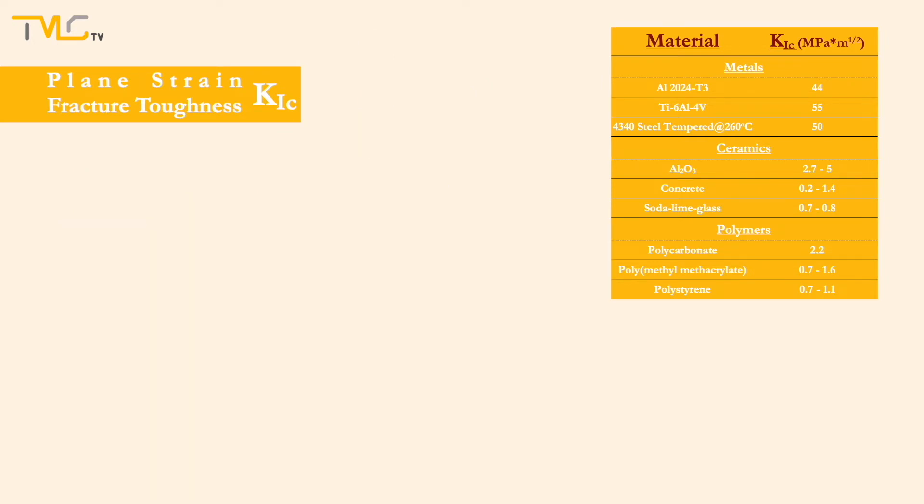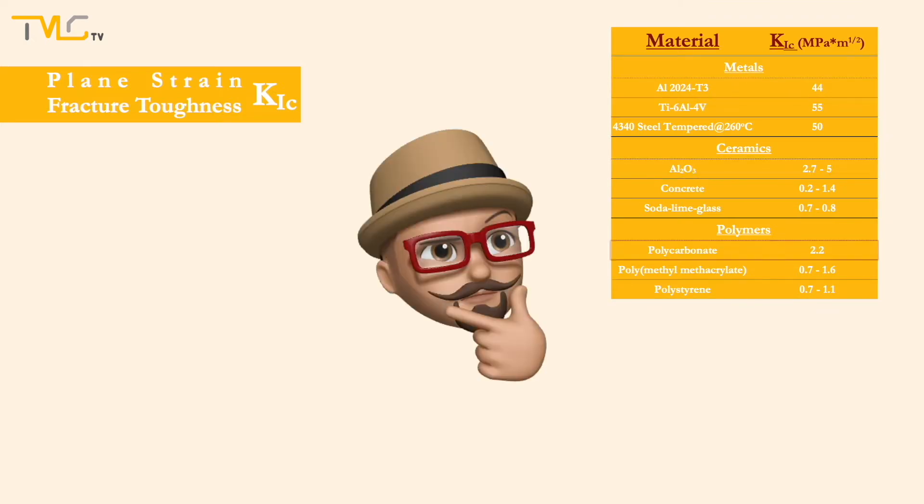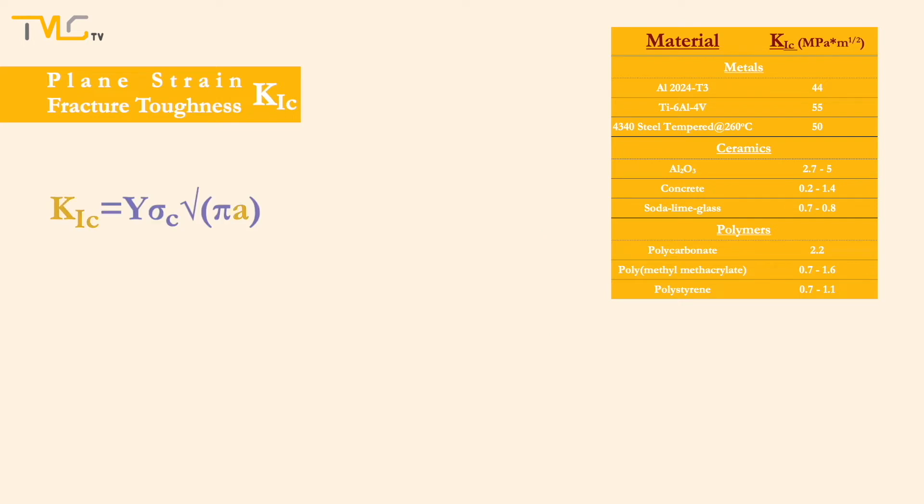Fracture toughness is one of the major parameters employed when selecting a material for a mechanically demanding application. In this context, fracture toughness is employed for deciding the maximum allowable crack size on material to prevent a catastrophic failure under operation.